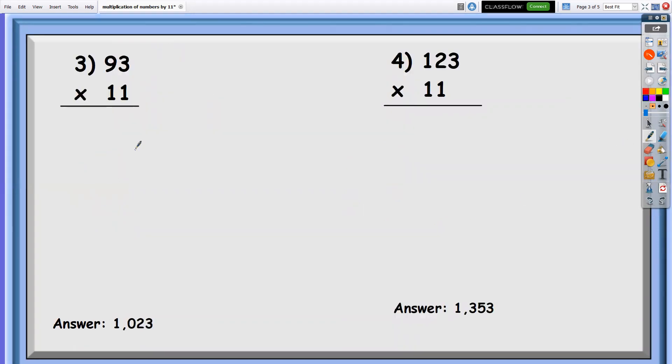Next, 93 times 11. So we will multiply this. Three times one, it's three. And add nine plus three. So that is 12.